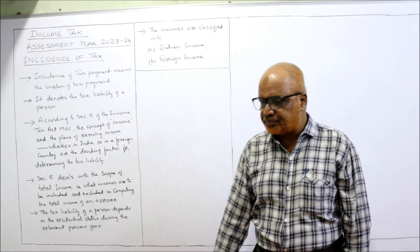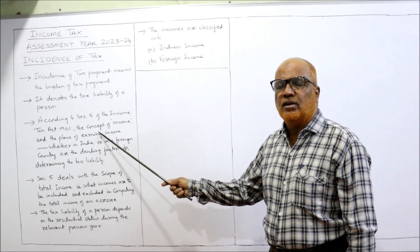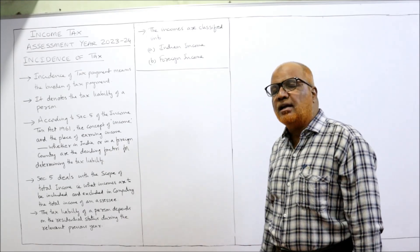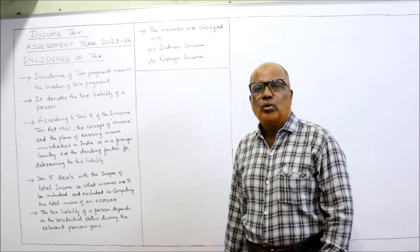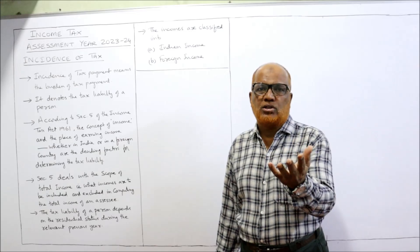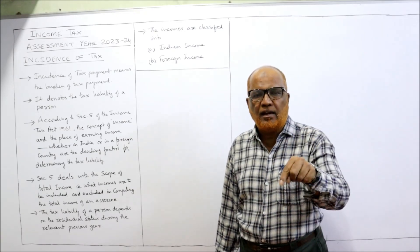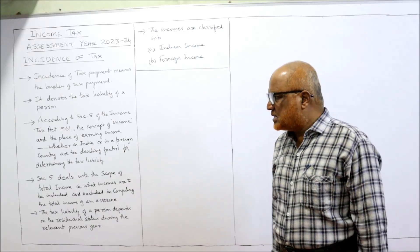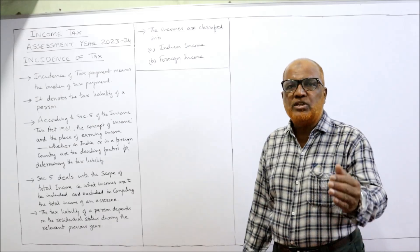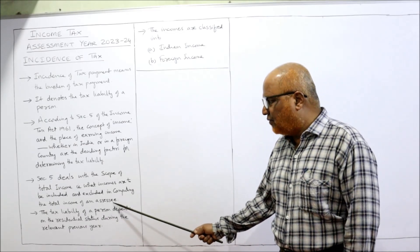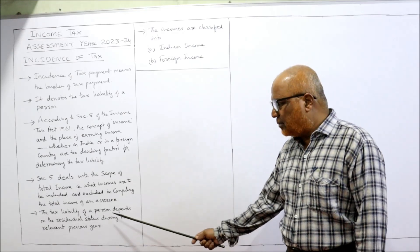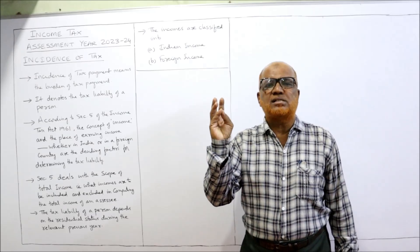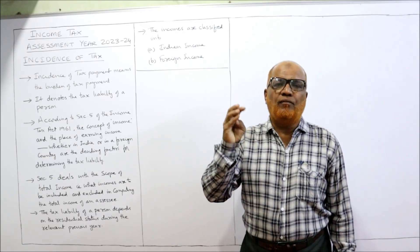According to Section 5, the concept of income and the place of earning the income — whether in India or in a foreign country — are the deciding factors for determining tax liability. Two things matter: whether it is income or not, and where the income has been earned. Section 5 deals with the scope of total income. The tax liability depends on the residential status of the person during the previous year.